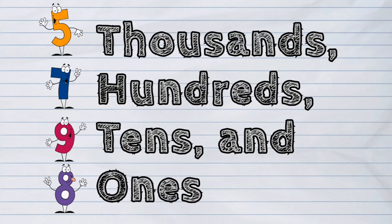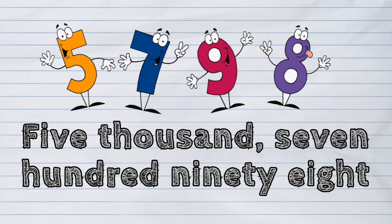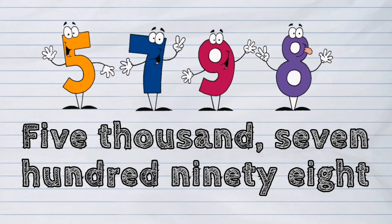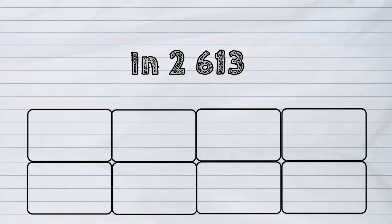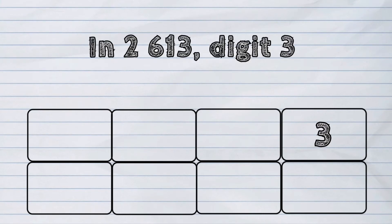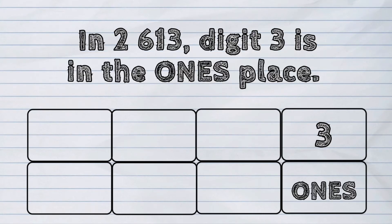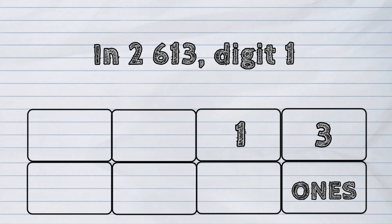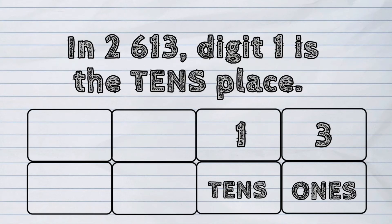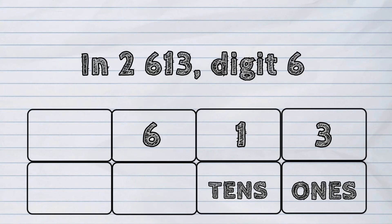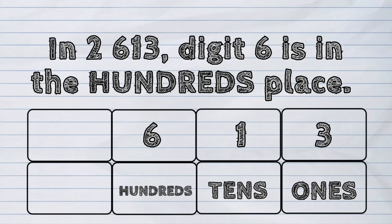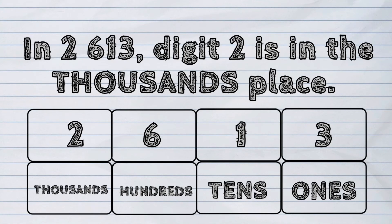We read it as 5798. Another example. In 2613, digit 3 is in the ones place. Digit 1 is in the tens place. Digit 6 is in the hundreds place. And digit 2 is in the thousands place.